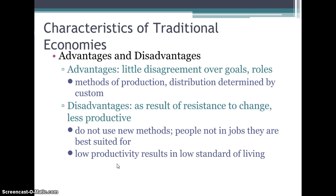Some advantages of a traditional economy: there's little disagreement over goals or roles in the economy, and the methods of production and distribution are determined by custom. The disadvantages are that as a result of resistance to change, they tend to be less productive. They don't use new methods like computers, robots, or assembly lines. Sometimes people are in jobs they're not really suited for, but it's just tradition that their family has always done that. There tends to be low productivity, which results in a low standard of living — not a lot of rich or even middle-class people, just enough to get by.